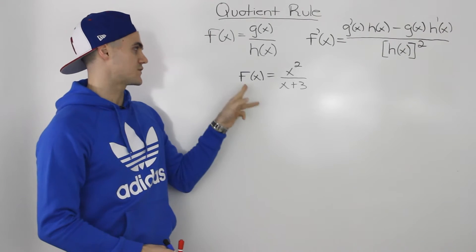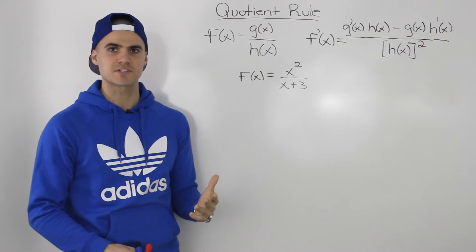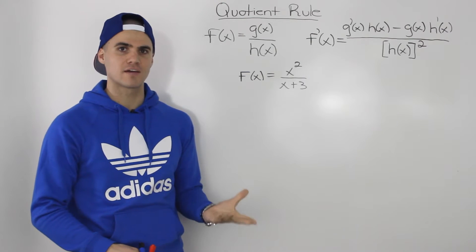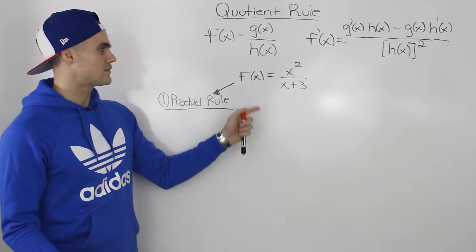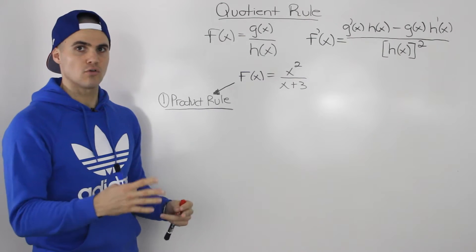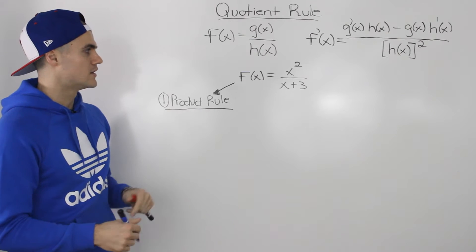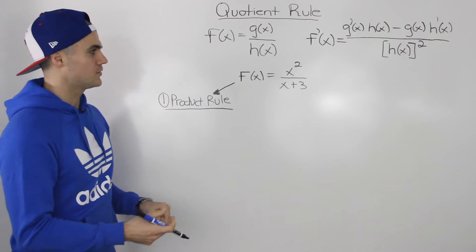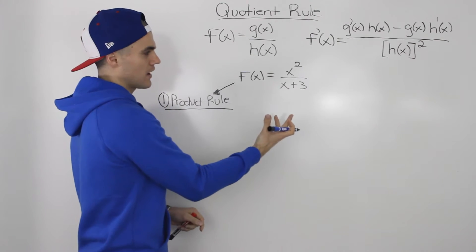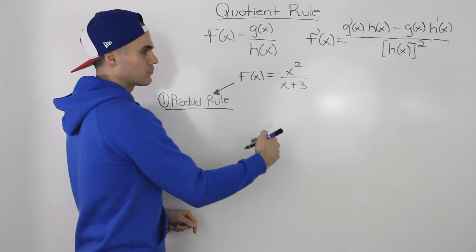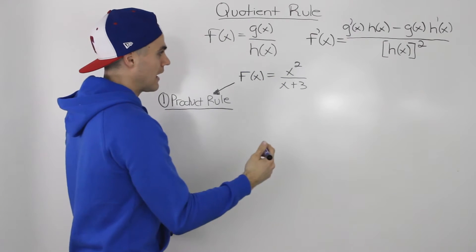Let's say I have the function f of x equals x squared over x plus 3, and I have to find its derivative. The way we've been solving these sorts of functions so far is using the product rule — taking any expression in the denominator, bringing it up to the numerator, and then using the power rule.